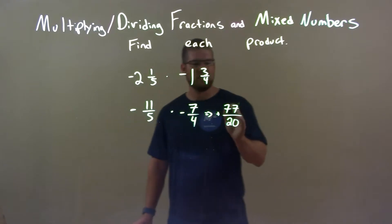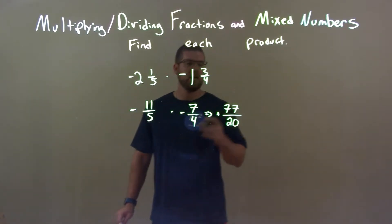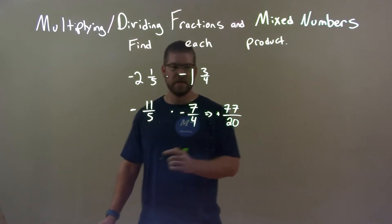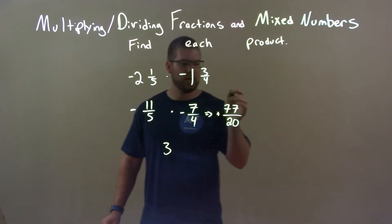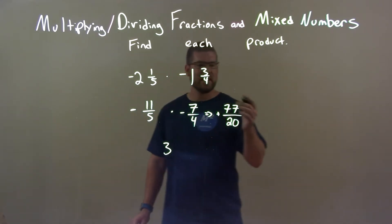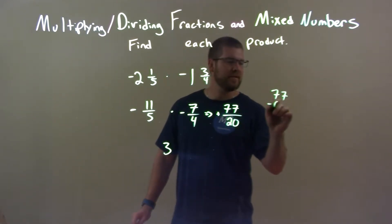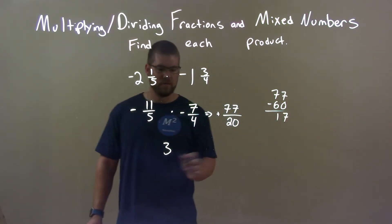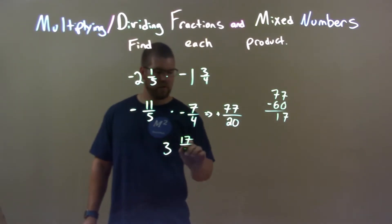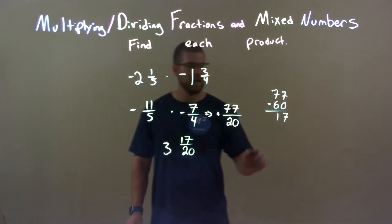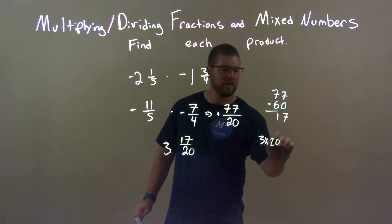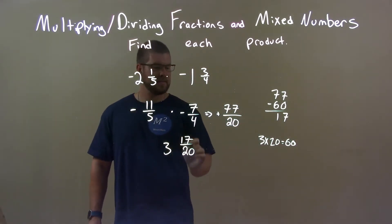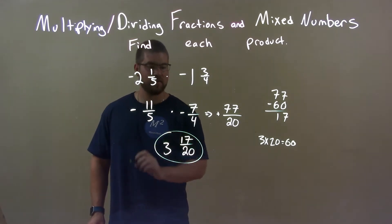How many times does 20 go into 77? Well, 20 goes into 60 three times. 3 times 20 equals 60. Then, 77 minus 60 — that leaves 17 left over. So we'll be left with 17 over 20. That gives us 3 and 17 over 20, and that is our final answer.